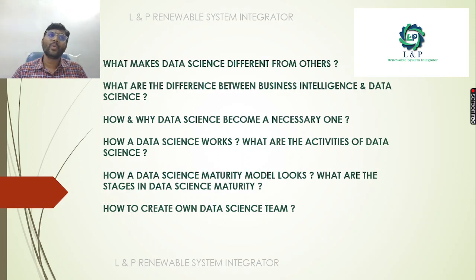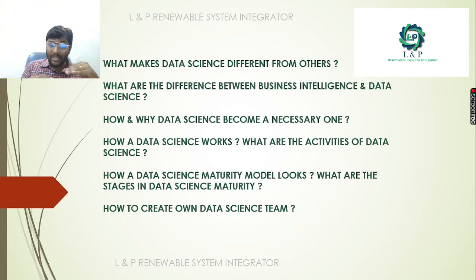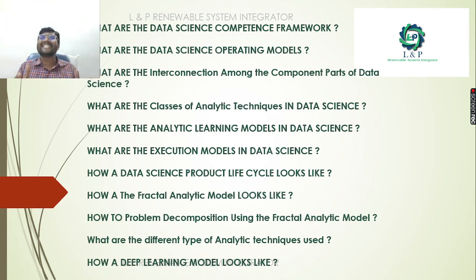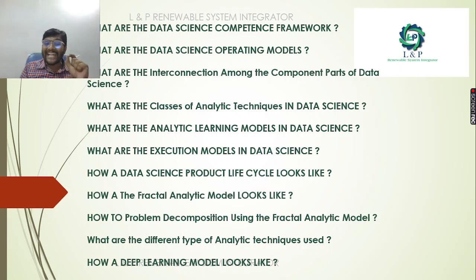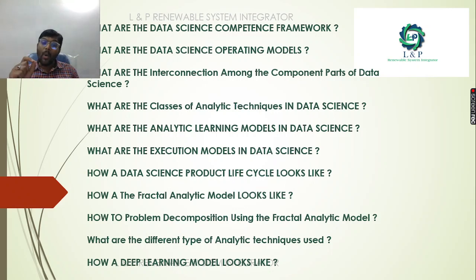In Part 2, we are going to discuss: what makes data science different from other systems; the biggest difference between business intelligence and data science; how and why data science became necessary; how data science works and what its activities are; the data science maturity model and its stages; how to create a data science team and the components framework; operating models and their interconnections; different component parts; classes of analytical techniques; analytical learning models; execution models; the data science product life cycle; the fractal analytical model; how a problem is decomposed using it; and different types of analytical techniques including deep learning.